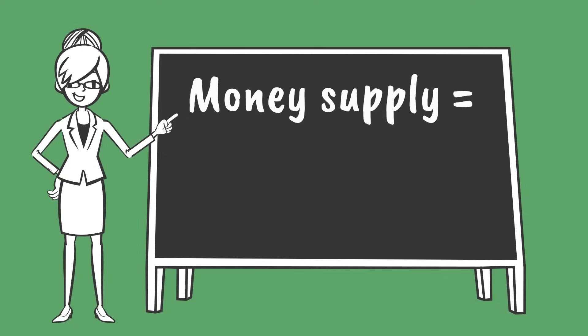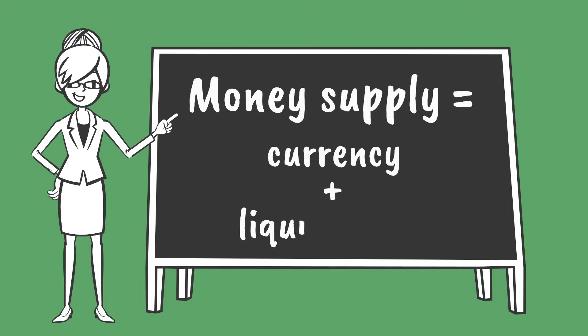The money supply tells us how much physical currency, as well as assets so liquid that they're pretty close to acting as physical currency, exists in the economy of a country at a certain point in time.